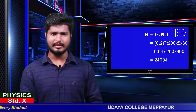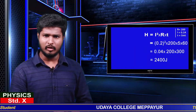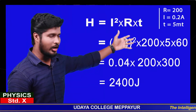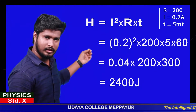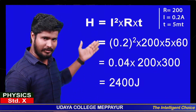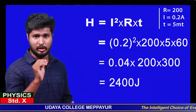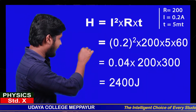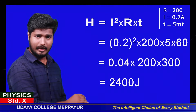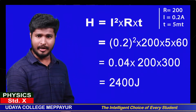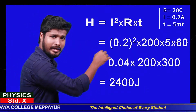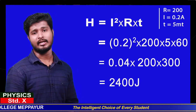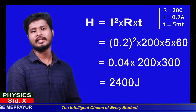So we can apply this formula. The sum is I squared. I is 2, so I squared is 4. R is 200 and T is 5 minutes.